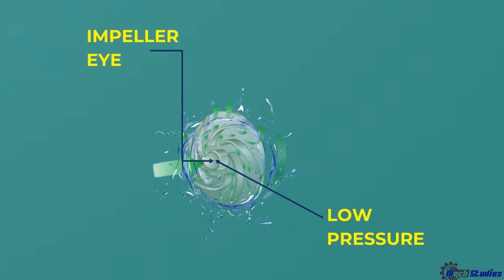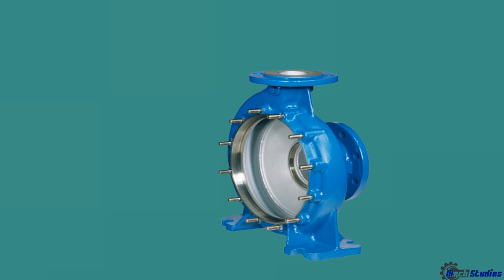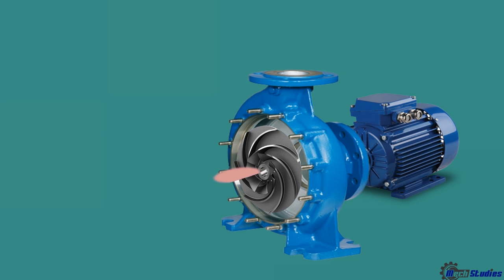We will see a sectional view to understand further. This is pump casing. This is pump impeller. This is motor. Now, this place is a low pressure zone at the impeller eye. So, due to low pressure, water is introduced into the pump. And finally, pressure will be increased at the discharge. Thank you.